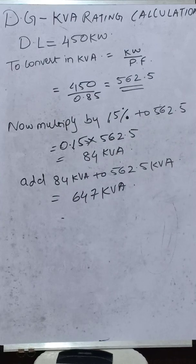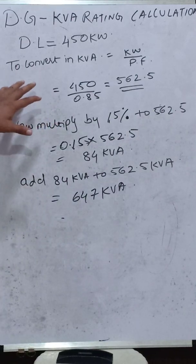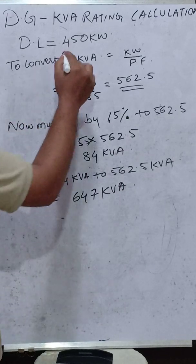We will be considering the same example to calculate the kVA rating of the DG set. The demand load was 450 kW.